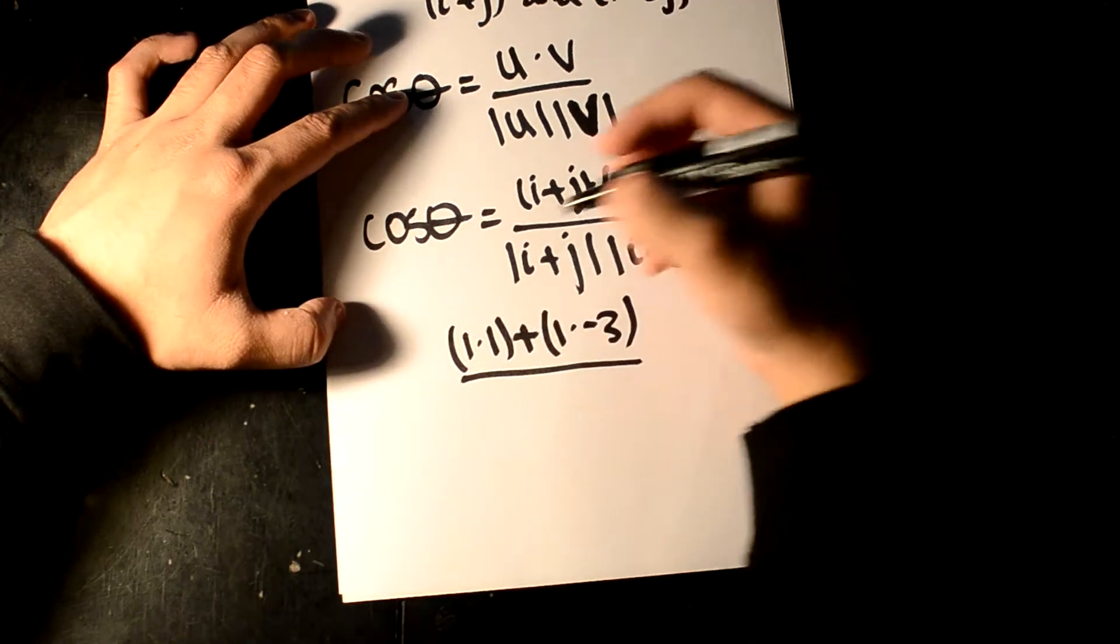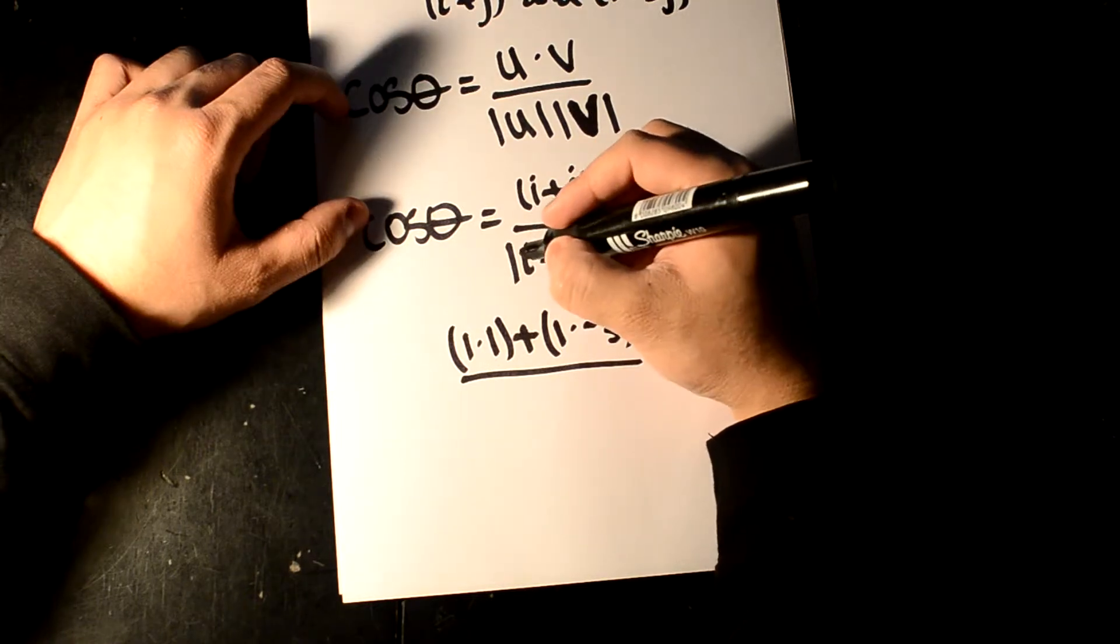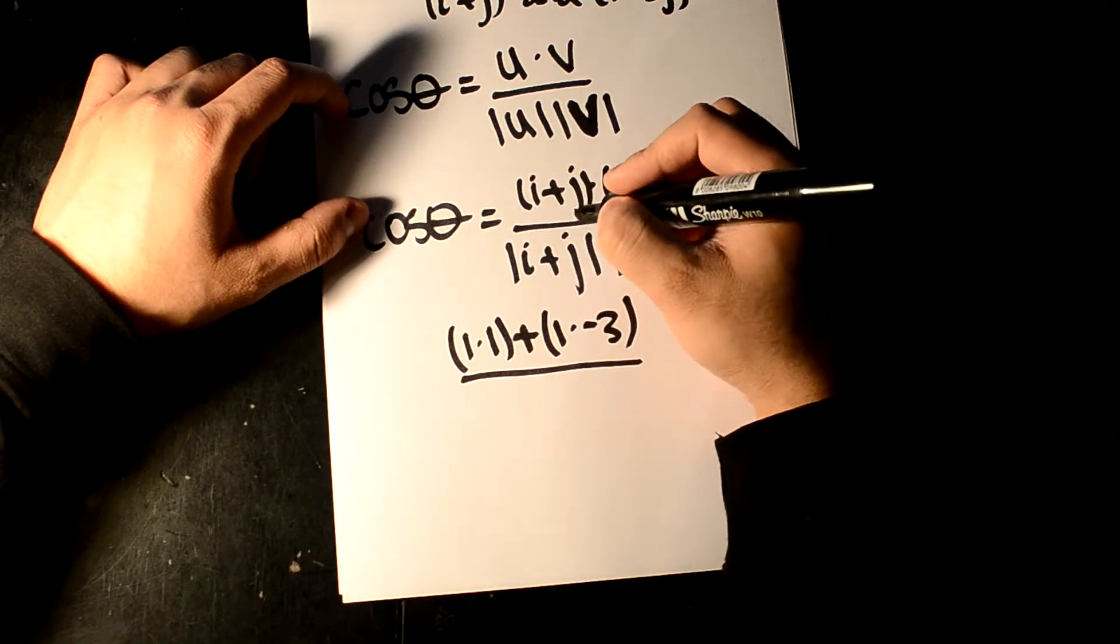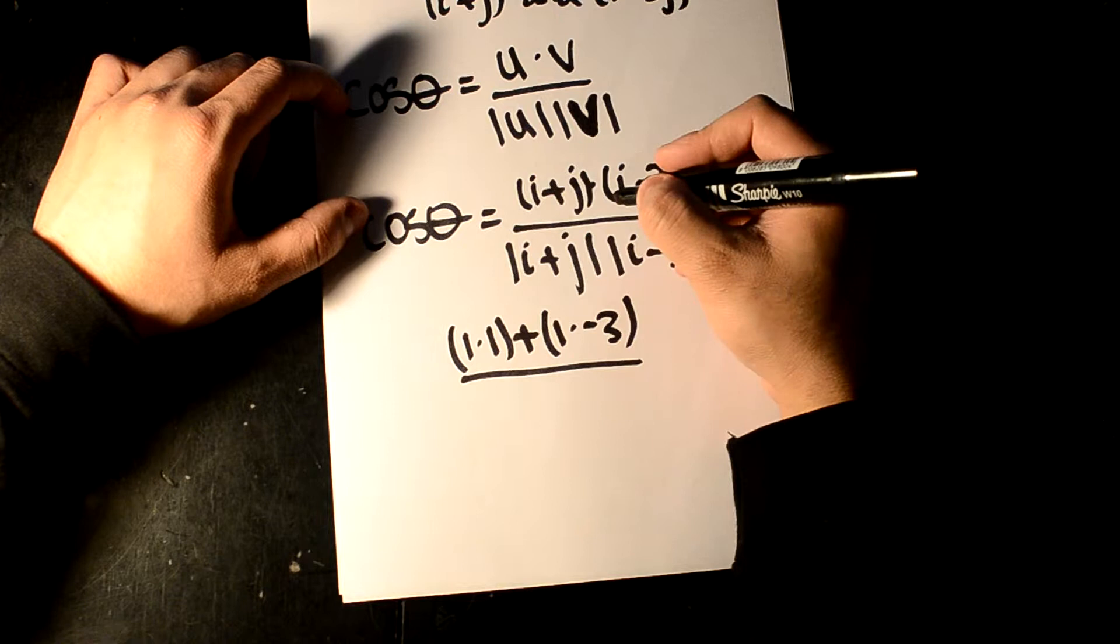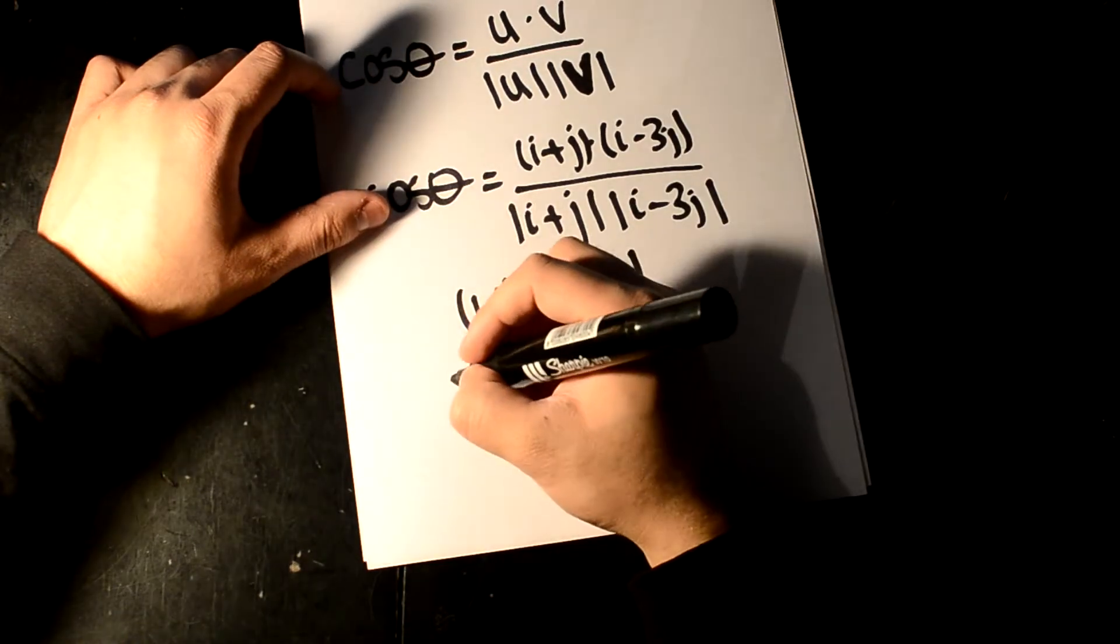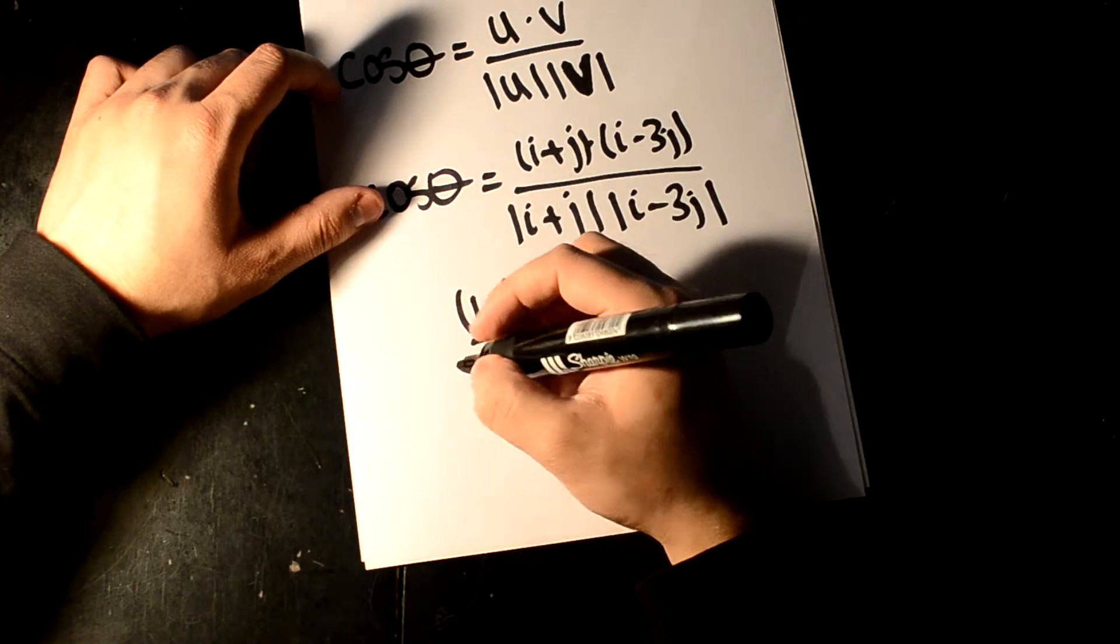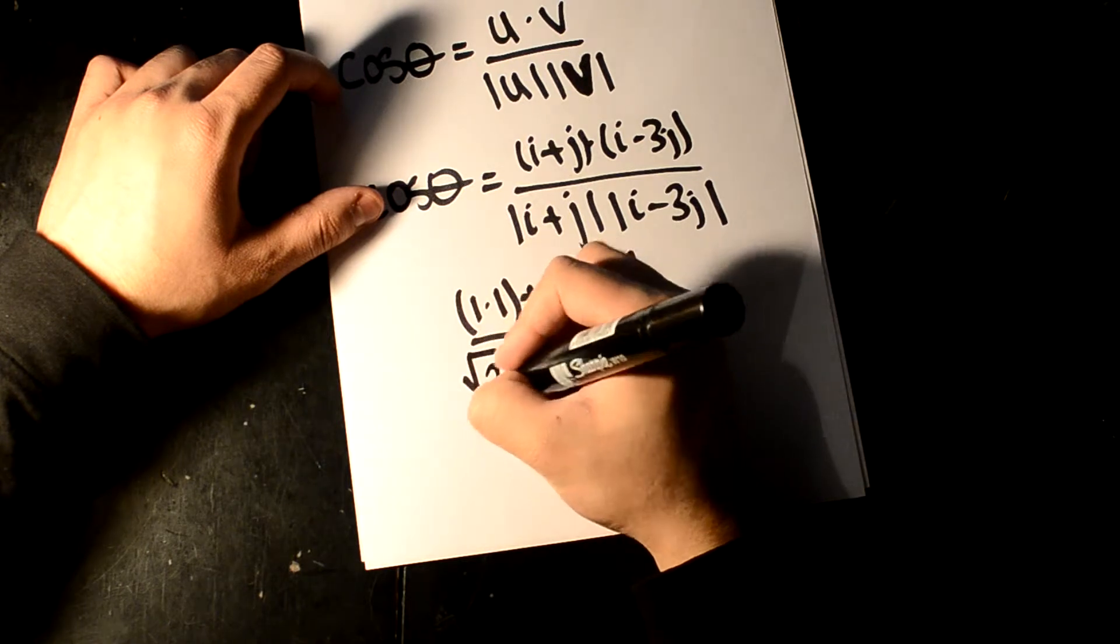And on the bottom, we're going to have to take the modulus of this, which is going to be 1 squared plus 1 squared all square rooted. So that's 1 squared plus 1 squared all square rooted. That is root 2.